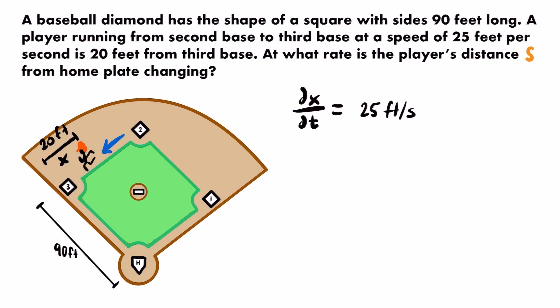We need to make an adjustment here: as the baseball player gets closer to third base, the distance x decreases. So the rate at which x is changing with respect to time is negative 25 feet per second — that distance is getting smaller. And at this specific moment in time, x is equal to 20 feet.